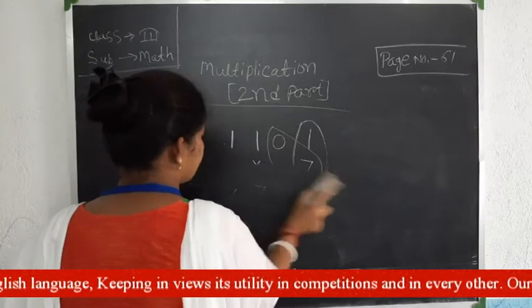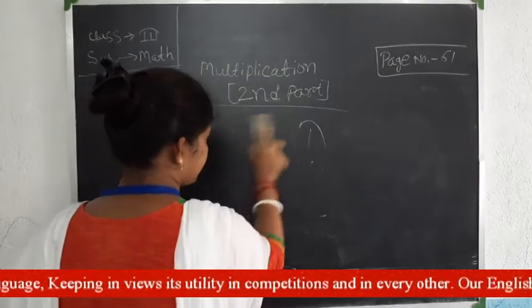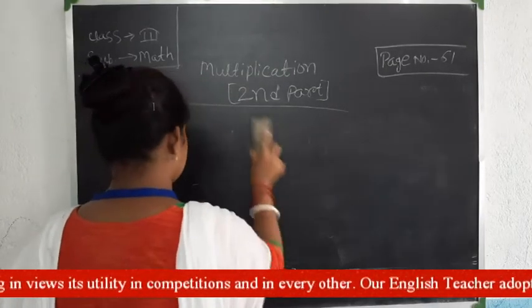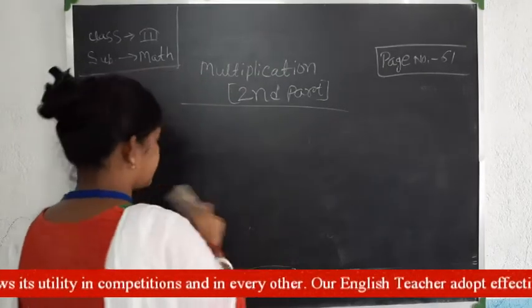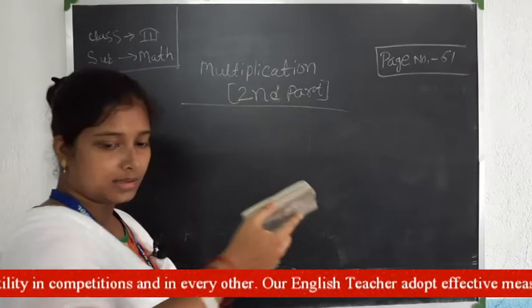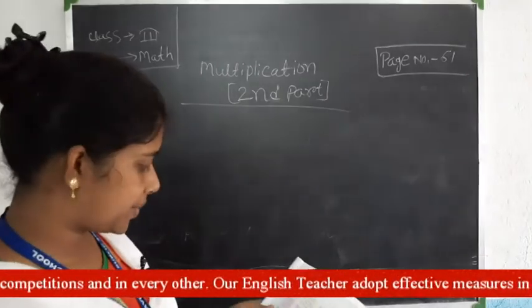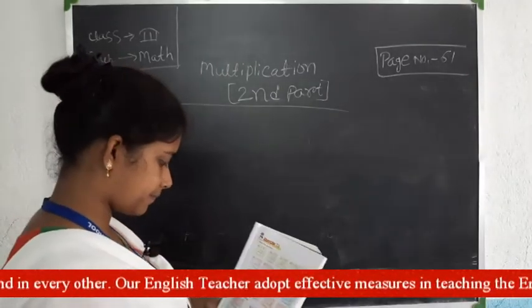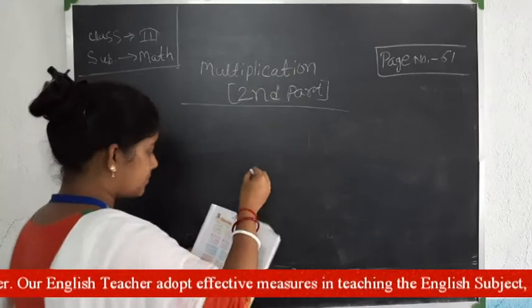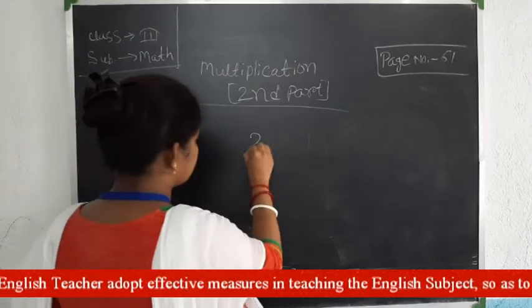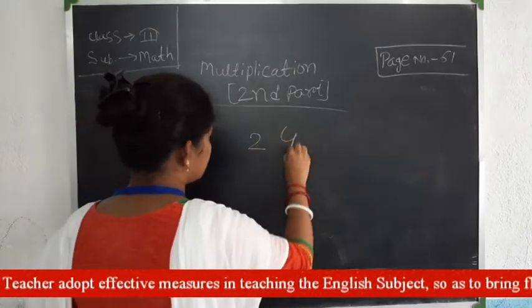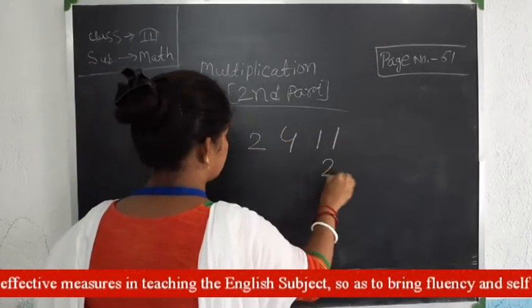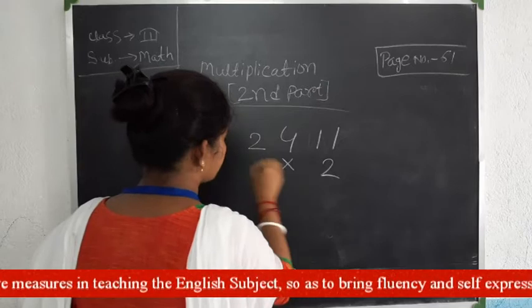Now I am solving another problem. Please see properly. I am solving problem 2: 111 multiplied by 2.